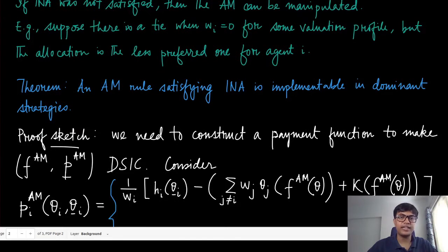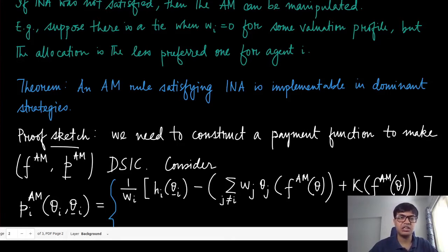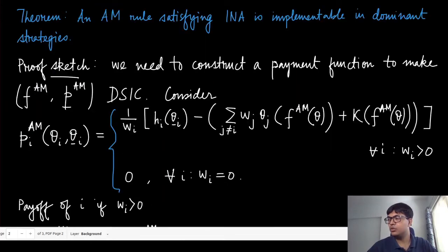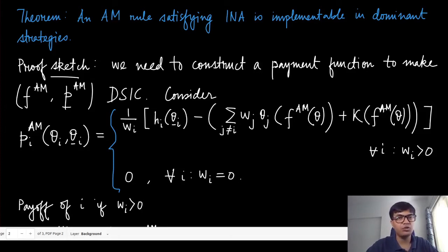Assuming the INA property — that for players with weight zero in the affine maximizer sum, the outcome does not depend on their type — we can show that the affine maximizer rule satisfying INA is implementable in dominant strategies. As long as the tie-breaking rule is consistent, INA is satisfied. We need to construct an appropriate payment, and the approach is very similar to the proof of the Groves mechanism.